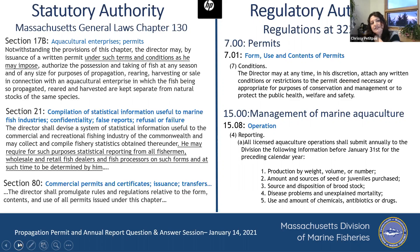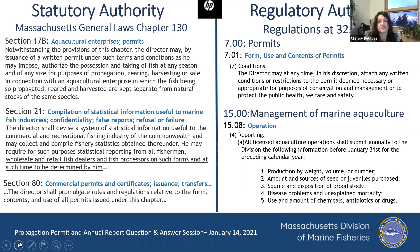There was some question about what's the authority — where do we get the authority to ask the questions. This is a very busy slide that basically conveys where the authority comes from. Chapter 130 is the basic law that governs marine fisheries, and Section 17B talks about aquacultural enterprises and MIP permits, which says 'under such terms and conditions as the director may impose.' So a lot of the questions on the aquaculture renewal application relate to Section B — that's where that authority comes from.